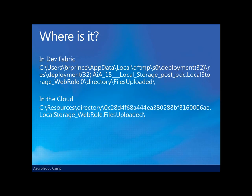Where exactly is this local resource file space? In the dev fabric, you'd find it on your C drive in a location under your particular user account. In the actual cloud, there are drives out there on those servers as well — they're just Windows 2008 servers. You'll find an actual drive and a directory with a GUID associated to your particular role where that file is kept. We couldn't access this file directly, as that's protected from us by the cloud, but it does reside out there in the Windows Azure cloud server.